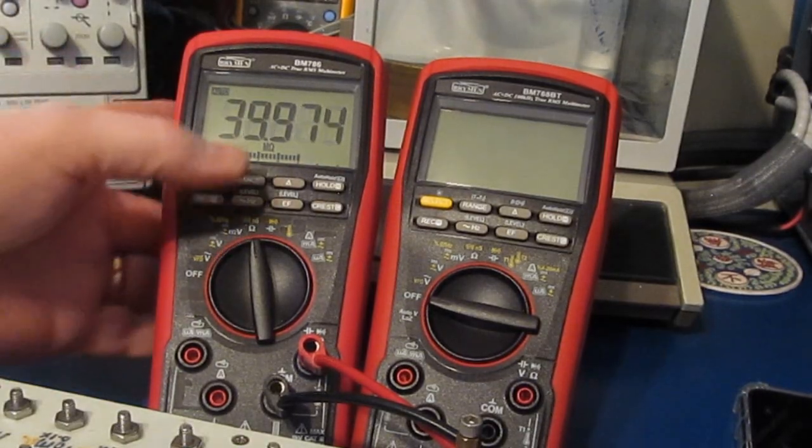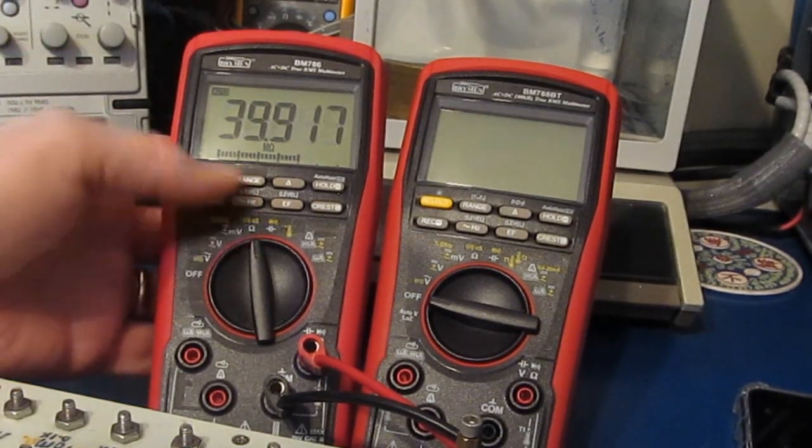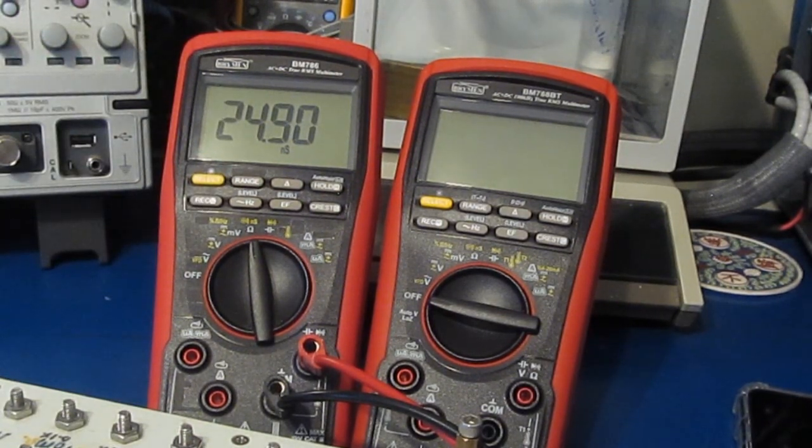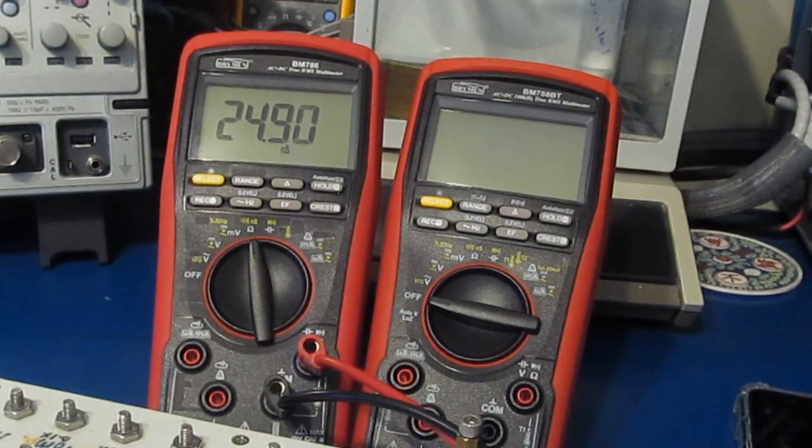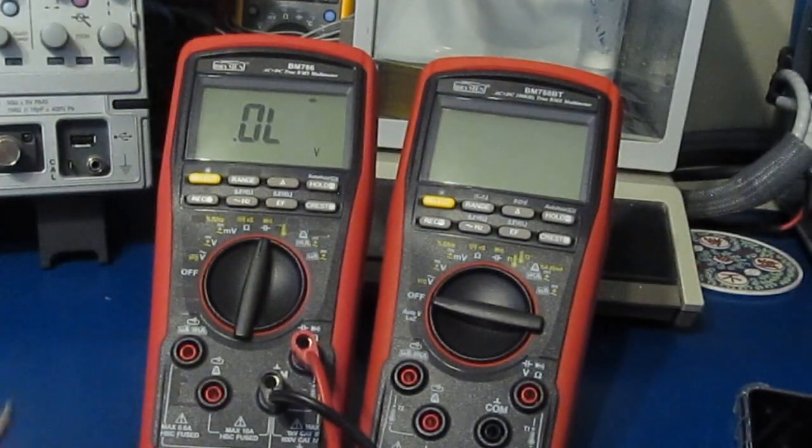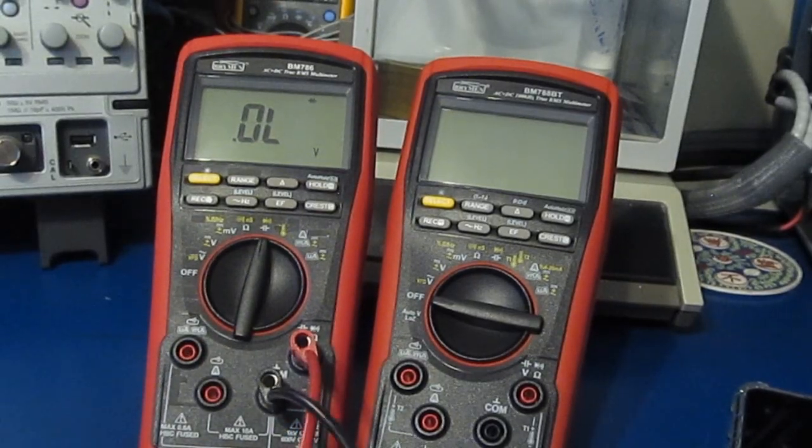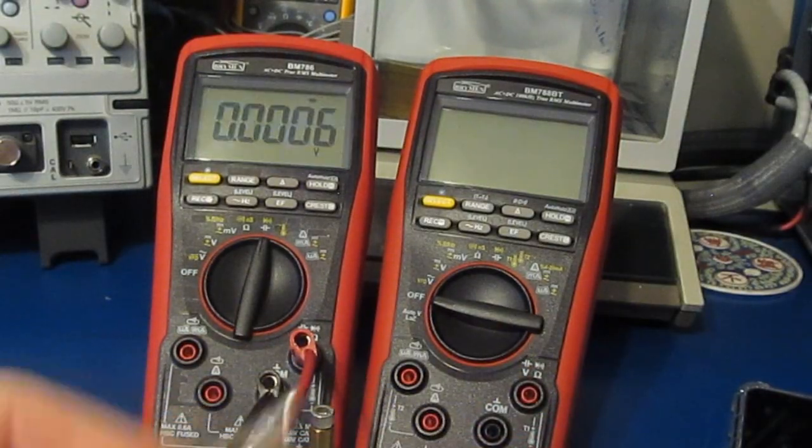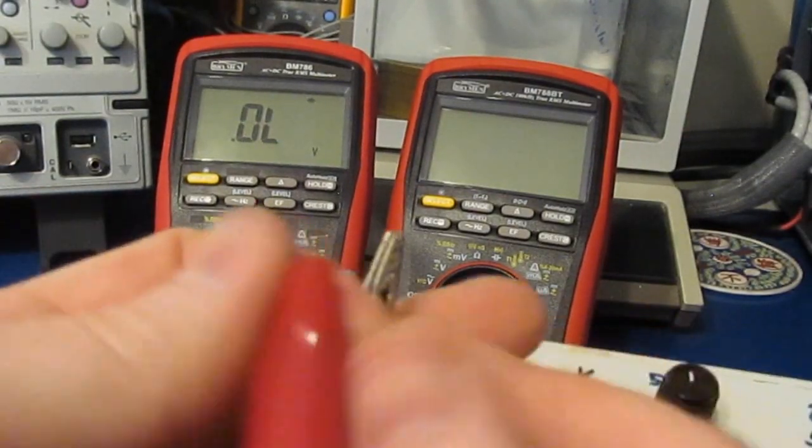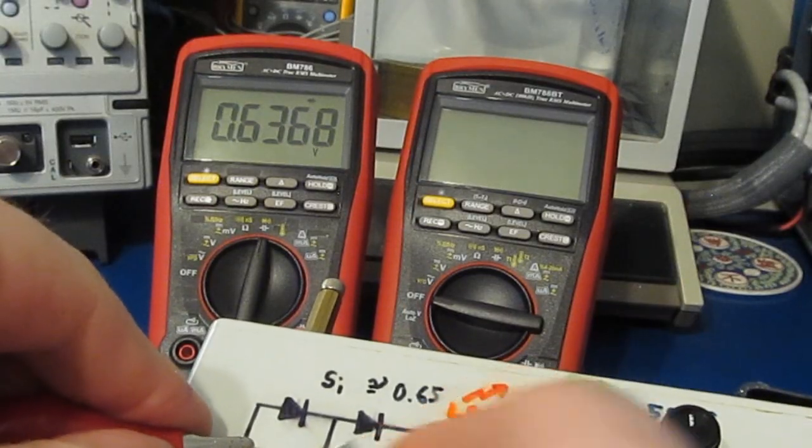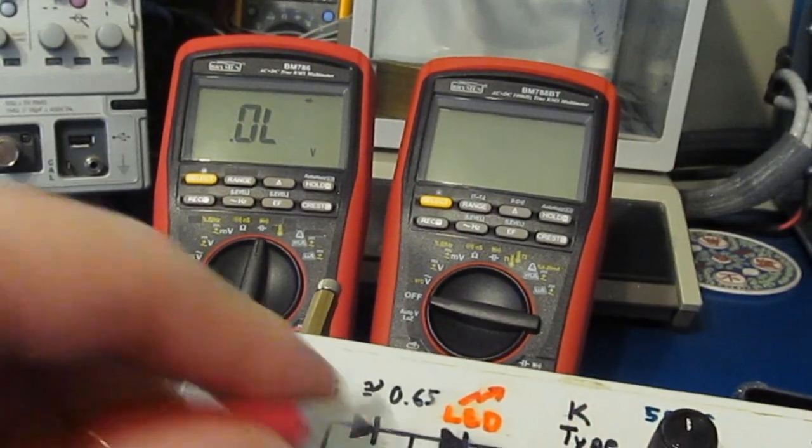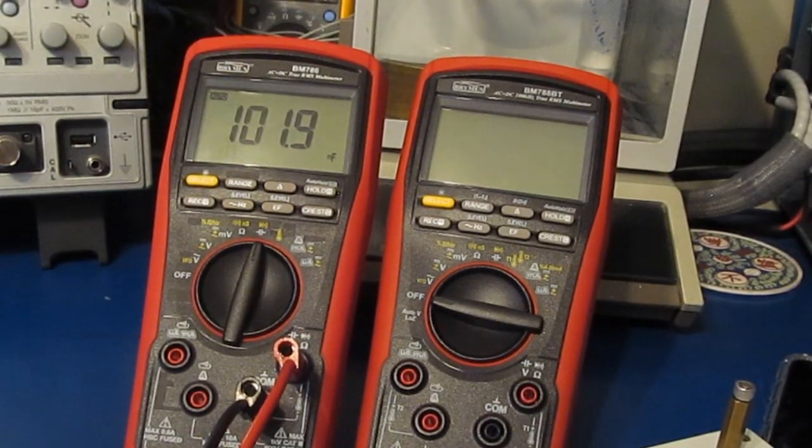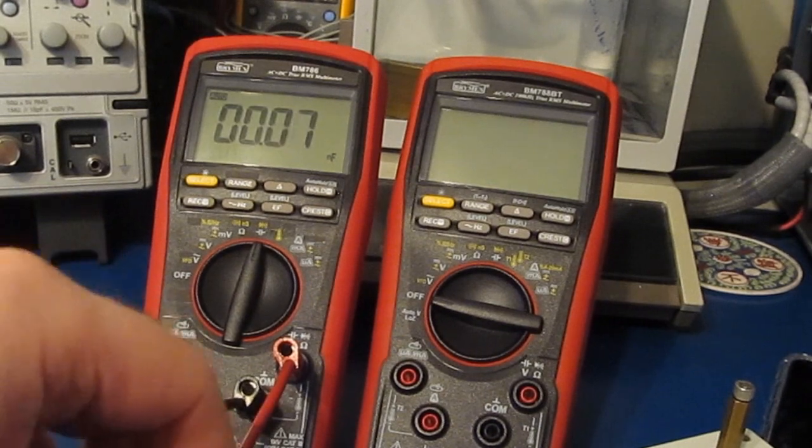This is our 40 meg. Again, this is a two percent part. And we're going to measure conductance. Should measure 25, and you can see it's fairly close. So here's our diode check mode. Again, before the alignment, this was reading 0.7 volts. With a short it should read zero.